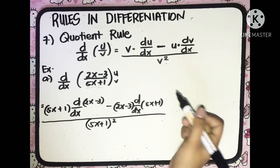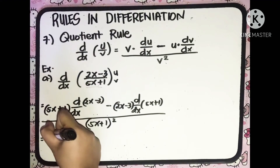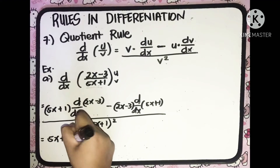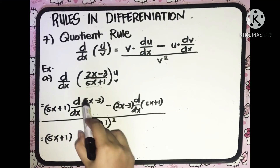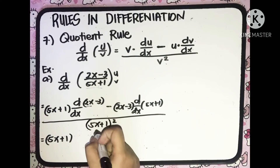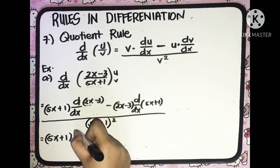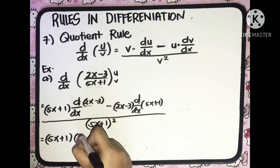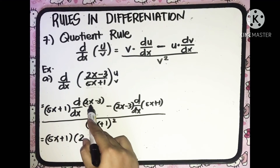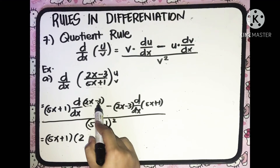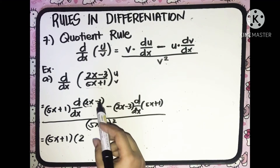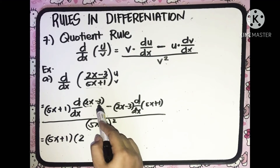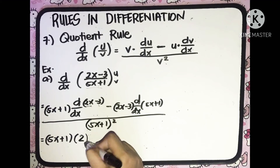Let's simplify. Just copy 5x plus 1 in the numerator. The derivative of 2x minus 3: the derivative of 2x is equal to 2, multiplied again to the derivative of x which is 1. And the derivative of negative 3 is equal to 0 since negative 3 is a constant. So the derivative of 2x minus 3 is equal to 2. And then minus,